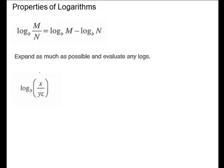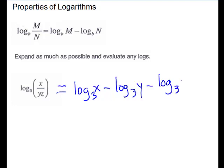For this problem we have a combination: log base 3 of a quotient, x over yz, where the denominator is a product. You will have as many separate terms as you have pieces. So we're going to have three separate logs. If it's on the numerator it's plus; if it's on the denominator it's minus. So when we rewrite this, it is log base 3 of x minus log base 3 of y minus log base 3 of z.